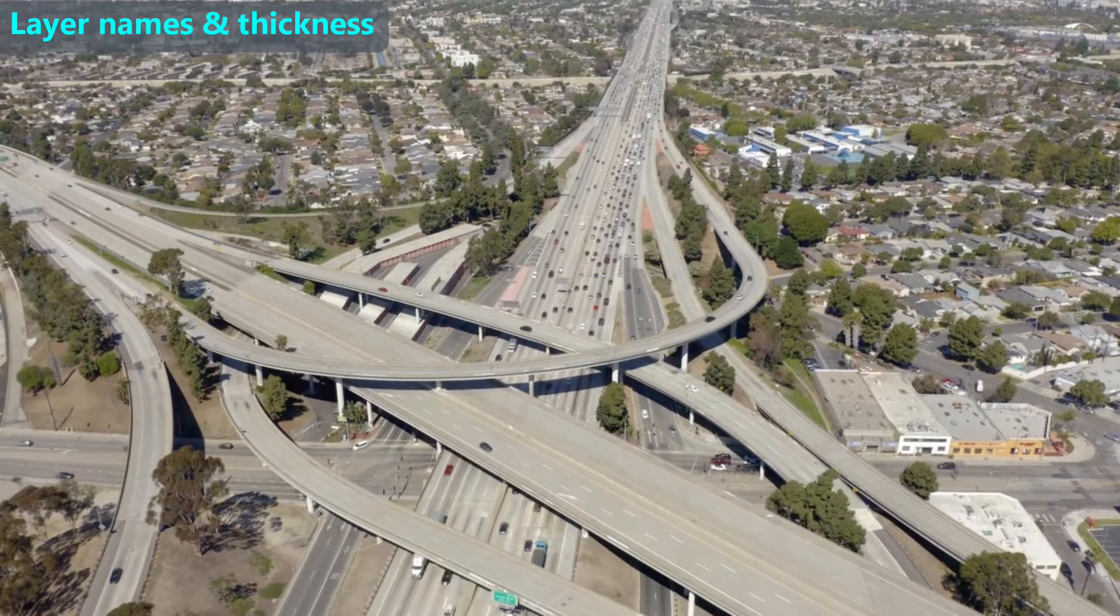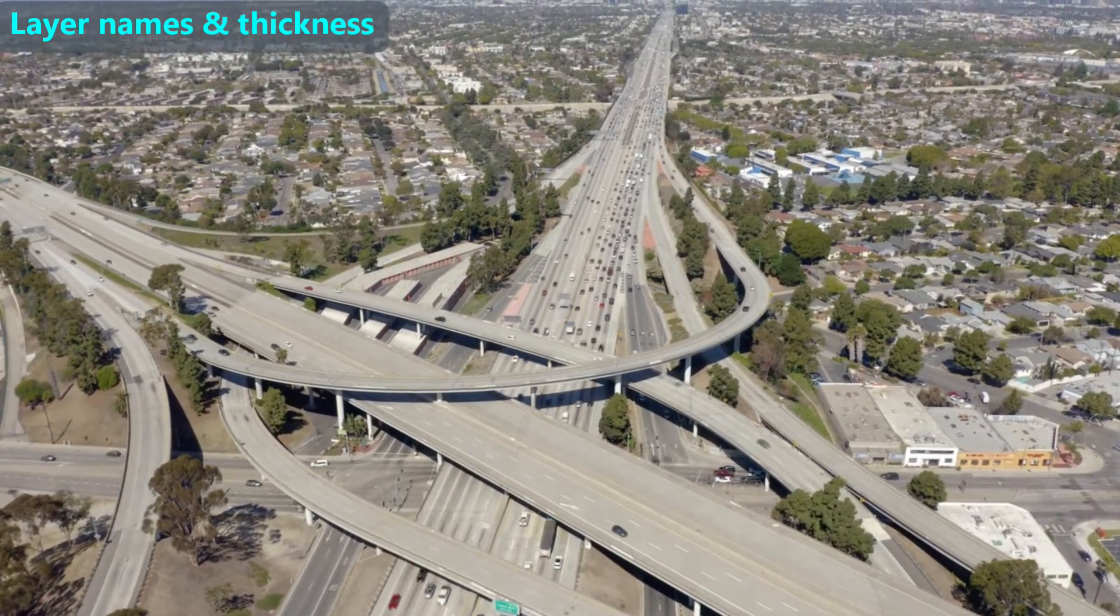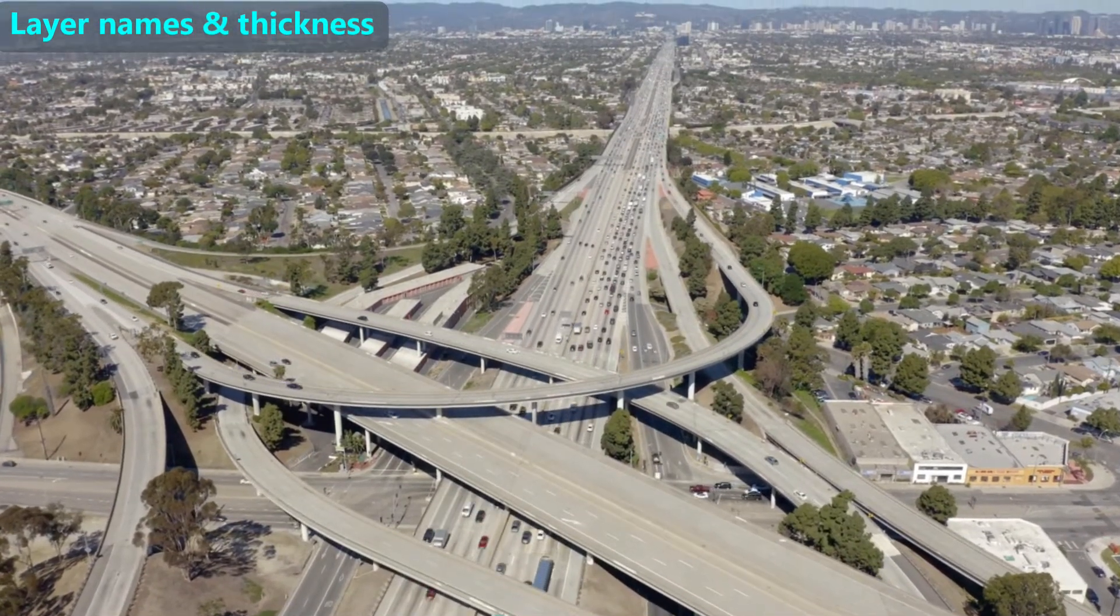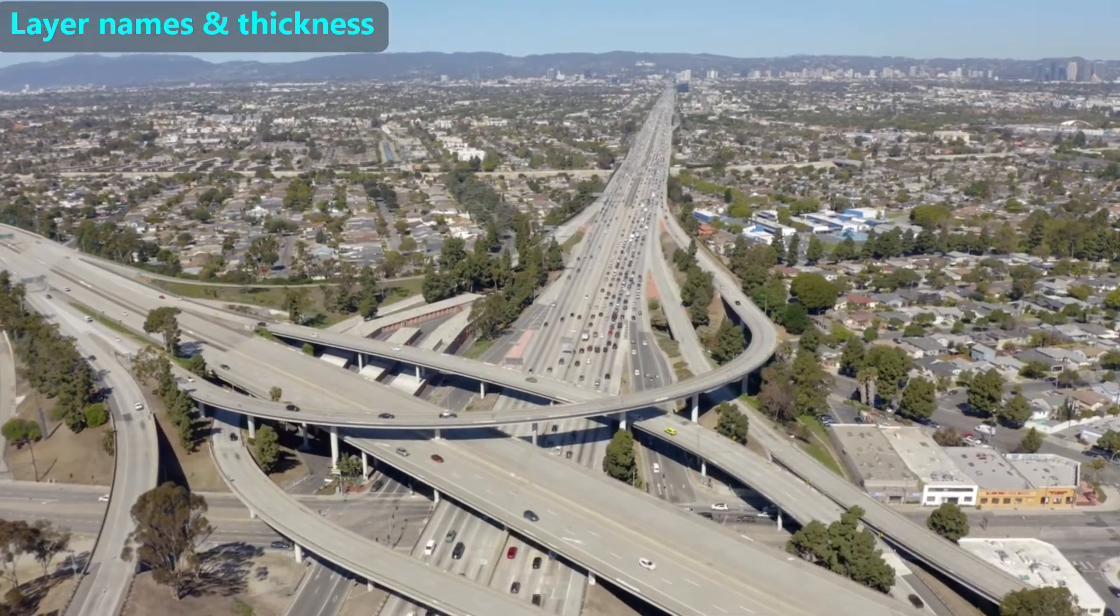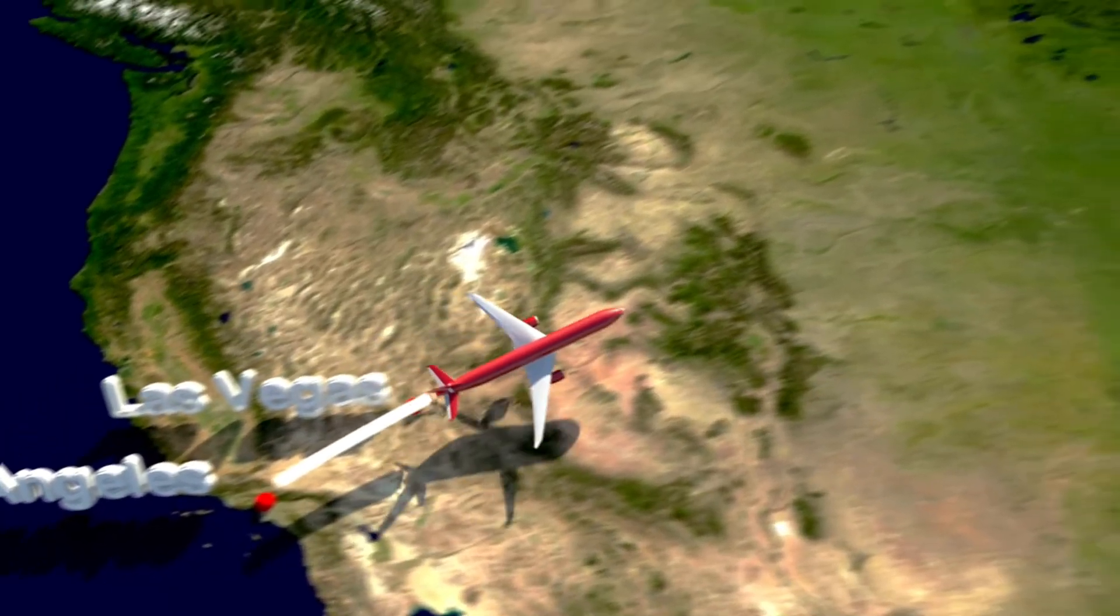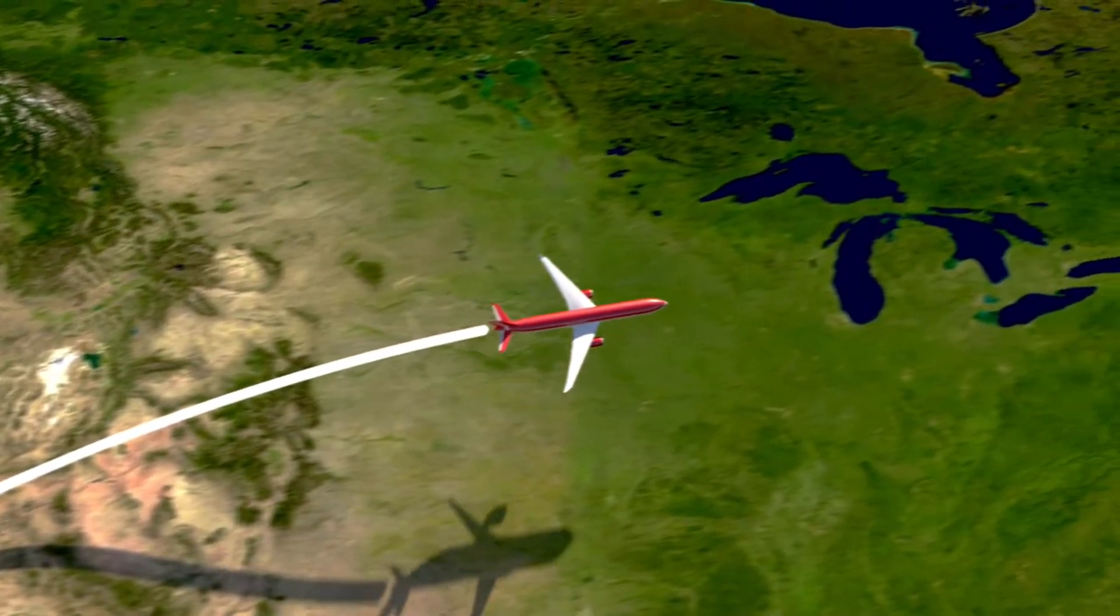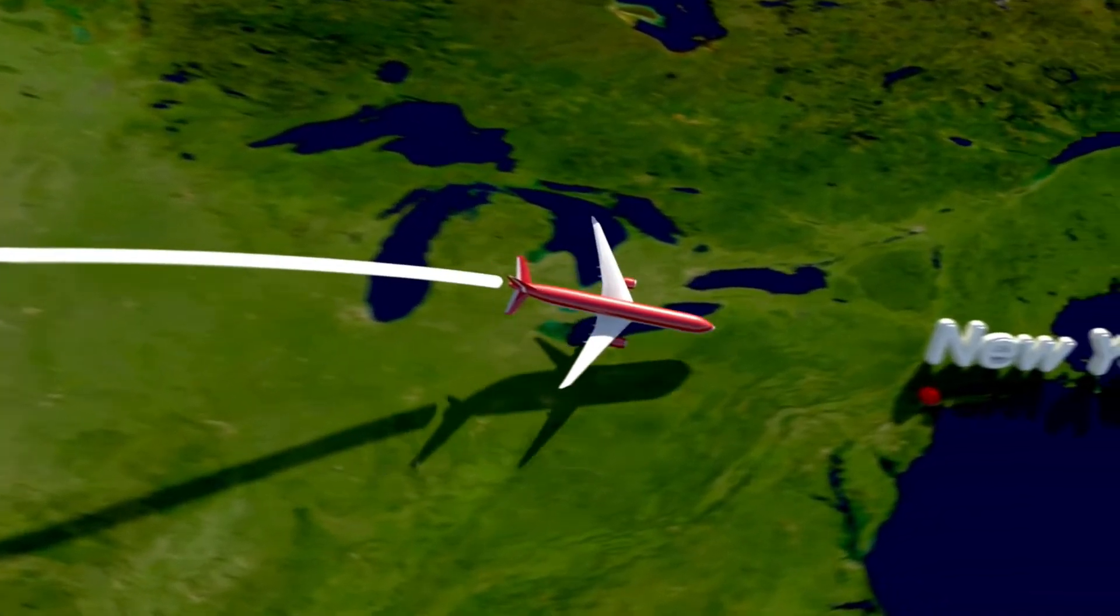Here is one way to remember these approximate sizes. The Earth's crust thickness is about the same distance between the northern part of Los Angeles and the southern part of Los Angeles. But the mantle's thickness is about the distance between Los Angeles and New York, and the core's radius is also about that same distance.